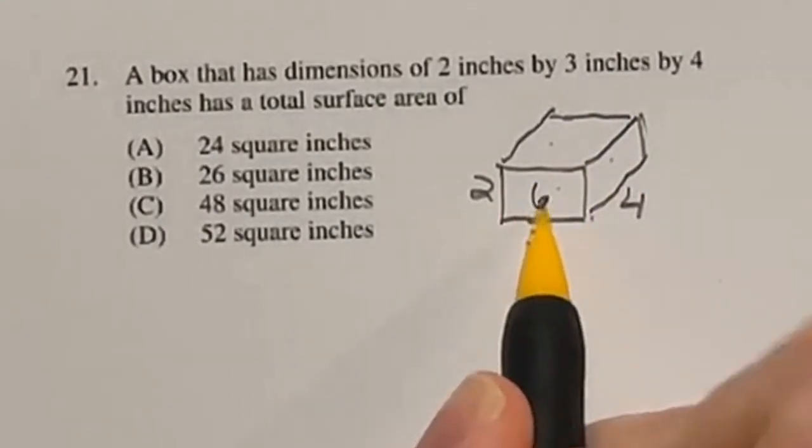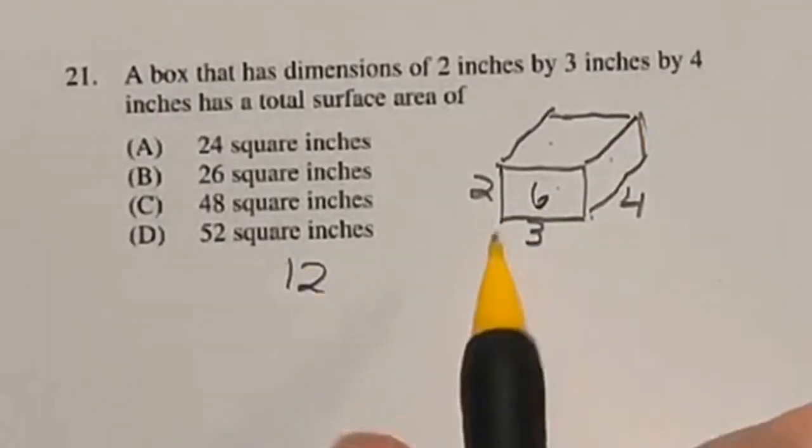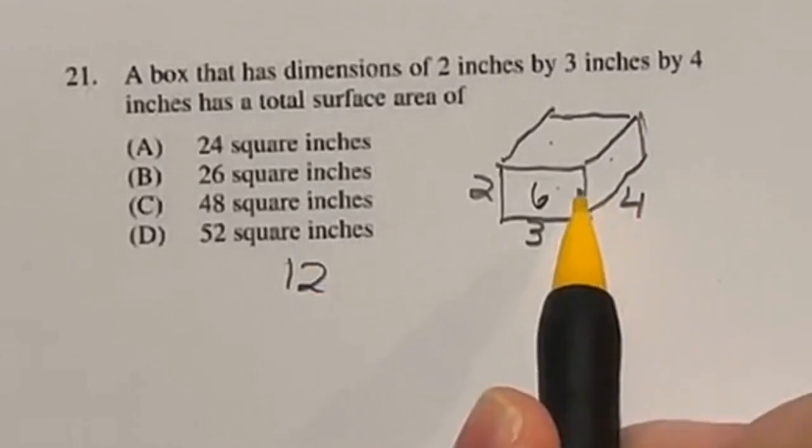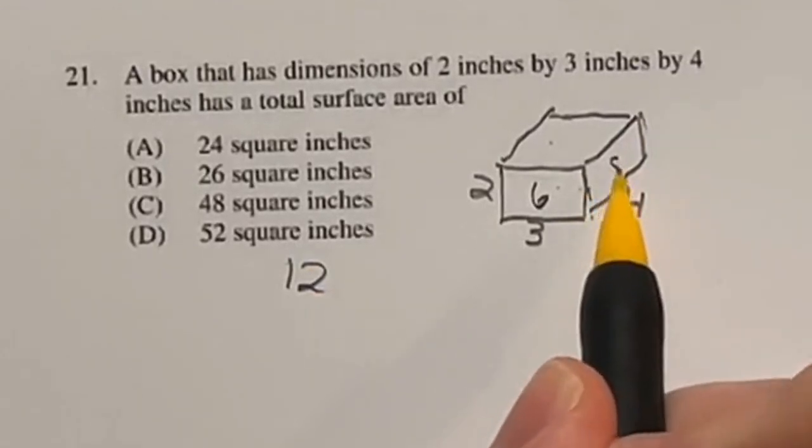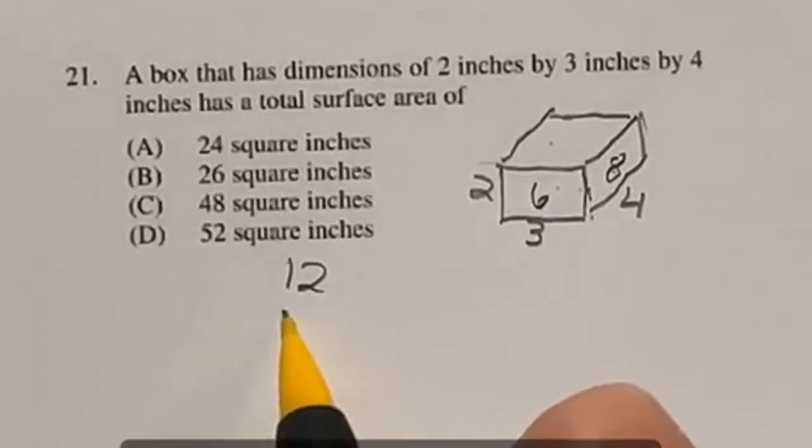Well, 2 times 3 is going to give me 6. We have that on this side and on the back side, so that's a total of 12. This guy right here is going to be 4 times 2, which gives us 8, and again, right there and on the other side over here, giving us a total of 16.